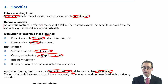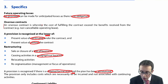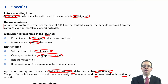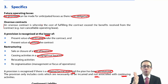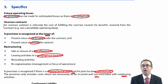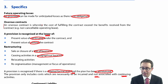The provision only includes costs which are necessary to be incurred and not associated with continuing activities. So you can't include anything such as retraining — that's to do with continuing activities. It's only the specific costs of closing down the business or moving from A to B. And that's everything to do with the specifics of provisions within IAS 37.